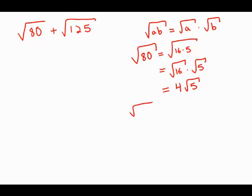Similarly, 125, we could figure out a way to factor this where one of the factors is a perfect square. Well, we notice that 125 is divisible by the perfect square 25. It's 25 times 5.